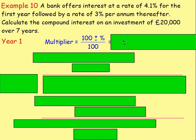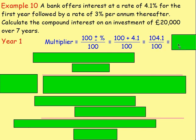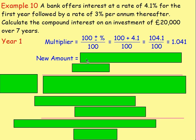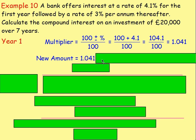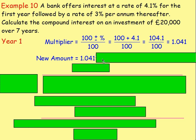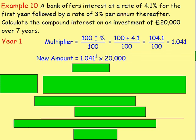We can use multipliers because it is a percentage increase. The amount of money in the account is £20,000, and after a year you'll have added 4.1% to that. The multiplier: start at 100, add on 4.1, divide by 100 — gives you 104.1, divide by 100, and you get 1.041. To work out the amount in the account after one year, take your multiplier to the power of one — so it's just 1.041 — then multiply that by the investment of £20,000, and you end up getting £20,820.